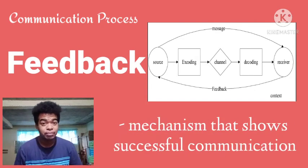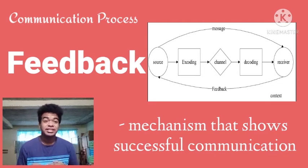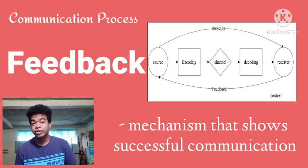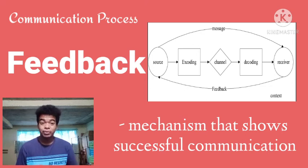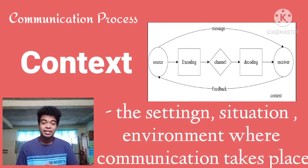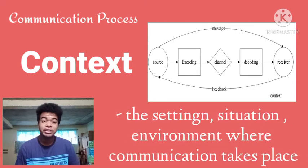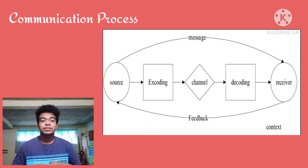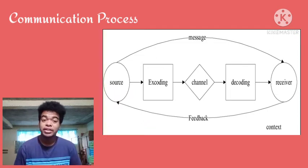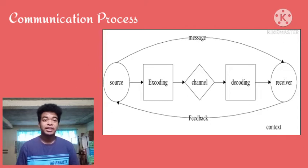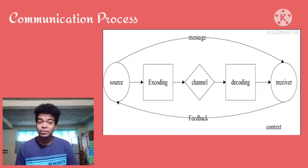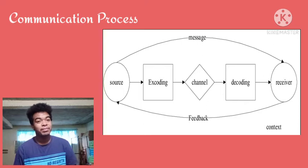Next is feedback — it is a mechanism which shows that there is a successful communication process. It can be seen in gestures, body language, and facial expressions. Feedback can also be vocal or a written remark. Context is the setting, situation, or environment wherein the communication takes place. To summarize, the communication process is composed of: the source, message, encoding, channel, decoding, receiver, feedback, and context.